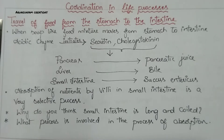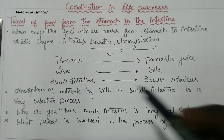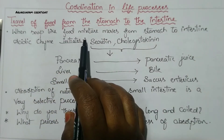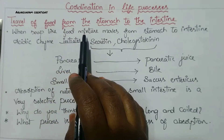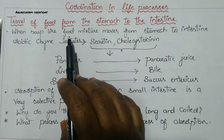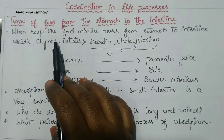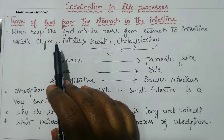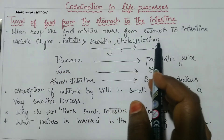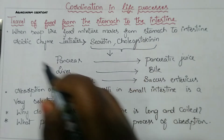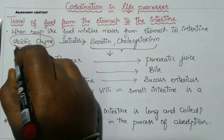After partial digestion of food in the stomach, food enters into the first part of the intestine, that is the duodenum. The food appears like a soup-like mixture when it enters the duodenum - not solid, more like a porridge-like consistency. This soup-like food mixture which entered into the duodenum is called chyme, and it is acidic in nature.